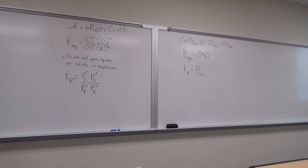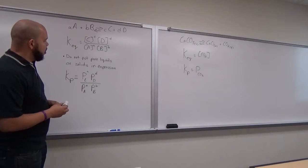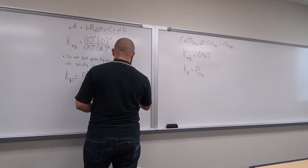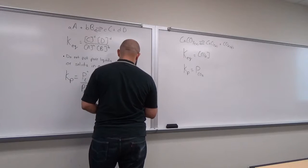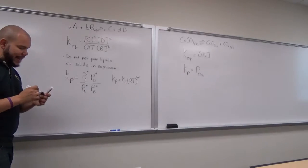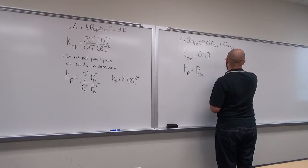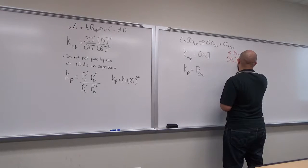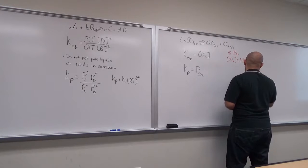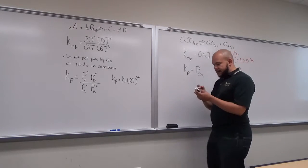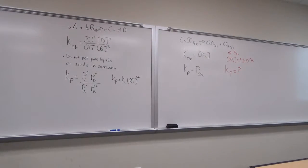Let's use this as an opportunity to look at our Kp equation. Remember, Kp = Kc(RT)^ΔN. Let's say I gave you the equilibrium concentration of CO₂ equal to 3.3 × 10⁻² M, and I wanted you to give me the value for Kp. This is a straightforward example of being given an equilibrium concentration and solving for Kp.